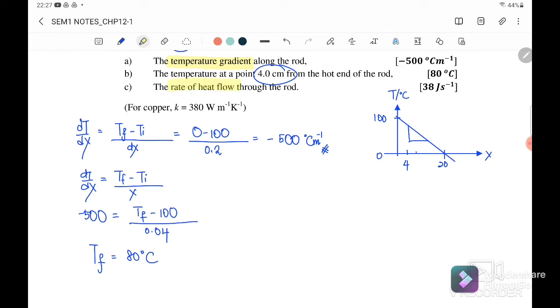Next, we want to find the rate of heat flow through the rod. The rate of heat flow is dQ/dt and is also equal to negative kA dT/dx. So we substitute k, the thermal conductivity.